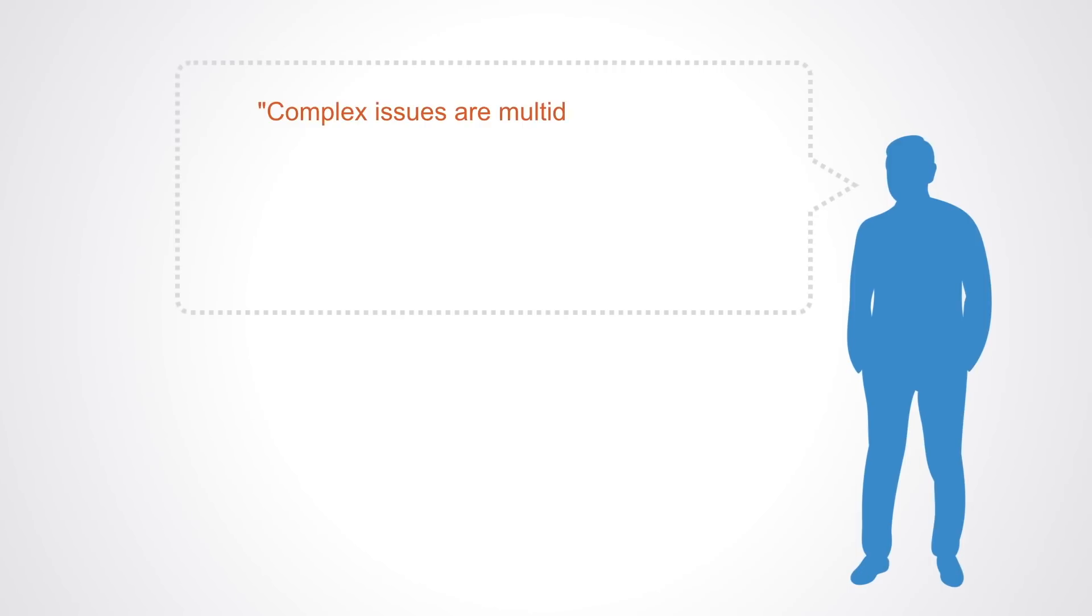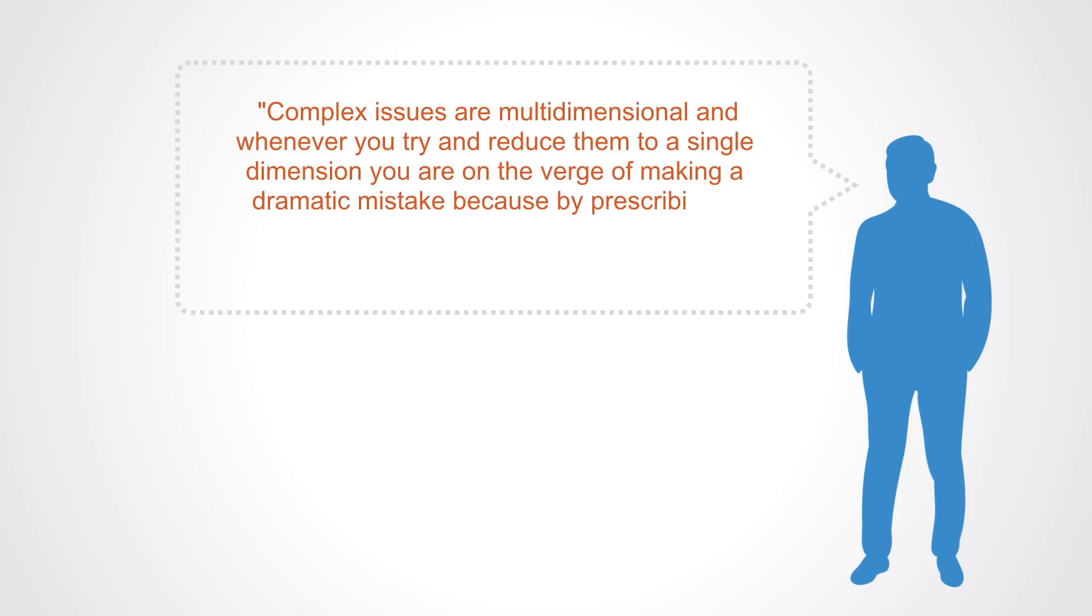Jocelyn Bourjean expresses this key multidimensionality tenet of systems change when saying: Complex issues are multidimensional, and whenever you try and reduce them to a single dimension, you are on the verge of making a dramatic mistake. Because by prescribing a solution that is unidimensional, you are about to make the problem even worse.